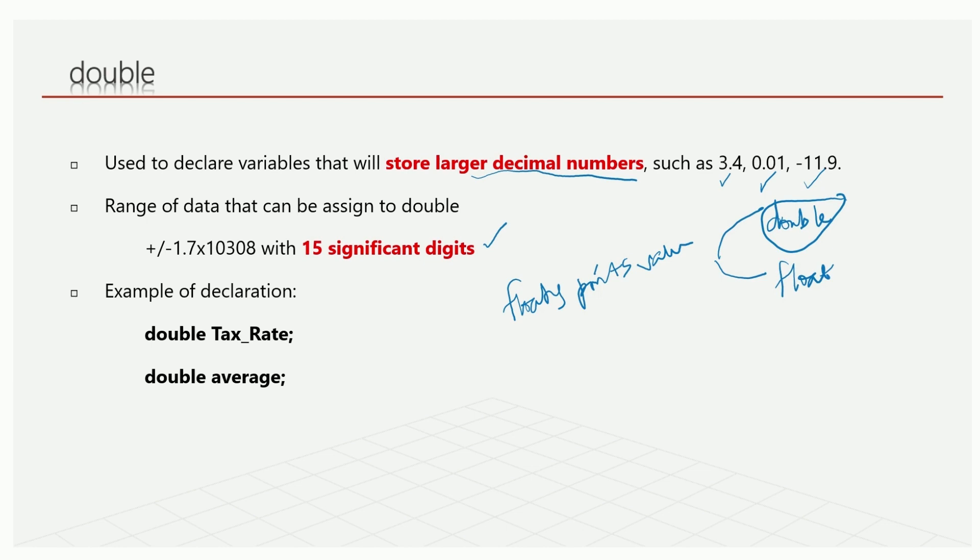Double can store more significant digits, so it's more precise, more accurate in terms of value. It stores more than double the value stored by float. Example of declaration: double tax rate, double average. This is a variable declaration statement.